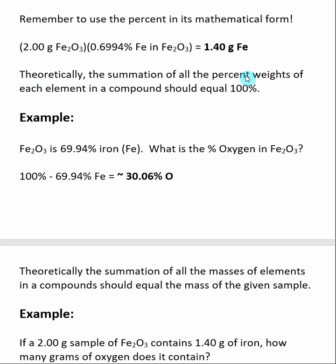Because the summation of all the percent weights of each element in a compound should equal 100%, we can use this fact to speed up some of our calculations. Once again, we know Fe2O3 is 69.94% iron. We can easily come up with the percent oxygen by simply taking 100% and then subtracting off the percent iron from that. What will be left is the percent oxygen, or at least a very close estimate of it.